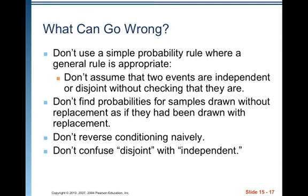So what can go wrong? Don't use a simple probability rule where a general rule is appropriate. Don't assume that two events are independent or disjoint without checking that they actually are. Don't find probabilities for samples drawn without replacement as if they had been drawn with replacement. Don't reverse conditioning naively — we'll look at an example in the next video using the tree diagram. Don't confuse disjoint and independent.